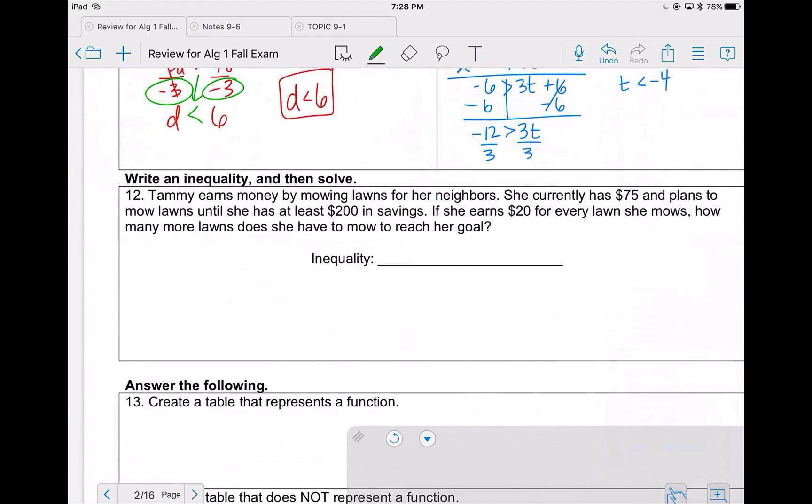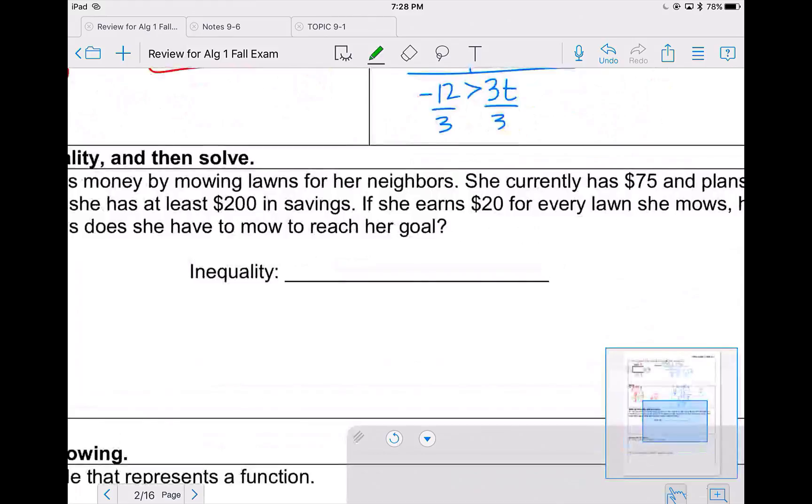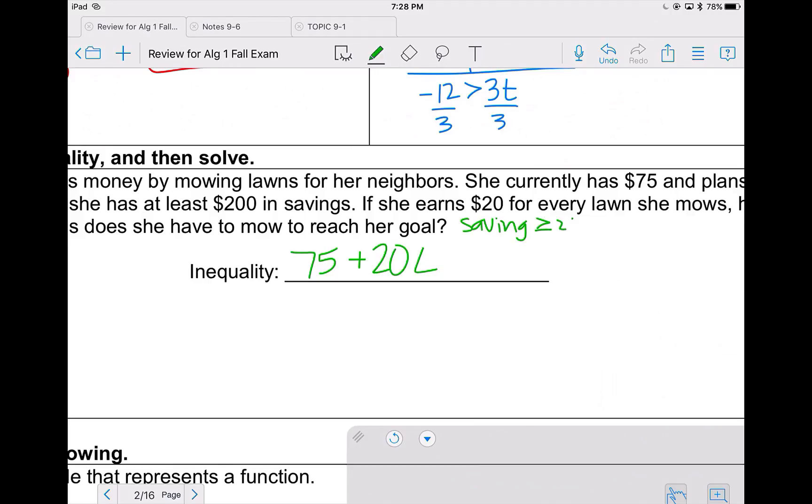Tammy wants to earn money by mowing lawns for her neighbors. She currently has 75 and plans to mow lawns until she has at least 200 in savings. If she earns 20 for each lawn she mows, how many more lawns does she need to mow to reach her goal? So in her savings, she already has $75 and she's adding 20 for every lawn. She wants her savings to be greater than or equal to 200. So I will use a greater than sign for what I'm trying to find. In order to solve, I subtract 75 from both sides. So 20L is greater than or equal to 125. Divide by 20, and when I do 125 divided by 20 in my calculator, I get L is greater than or equal to 6.75. So she would need to mow at least 7 because you can't mow 0.25 of a lawn.